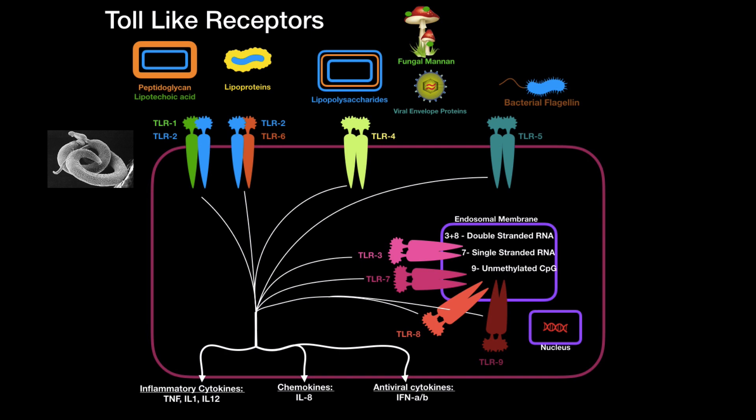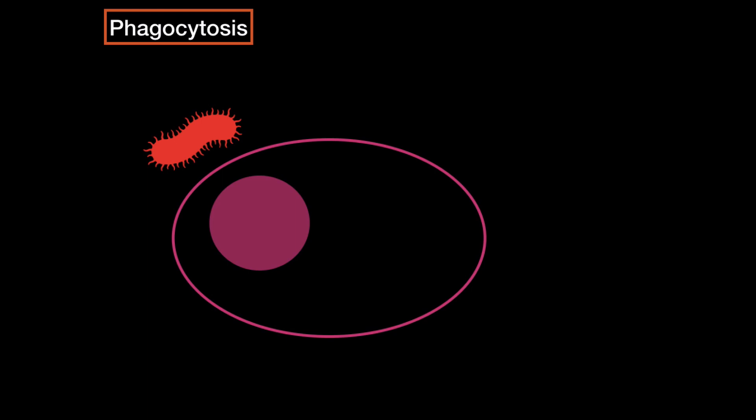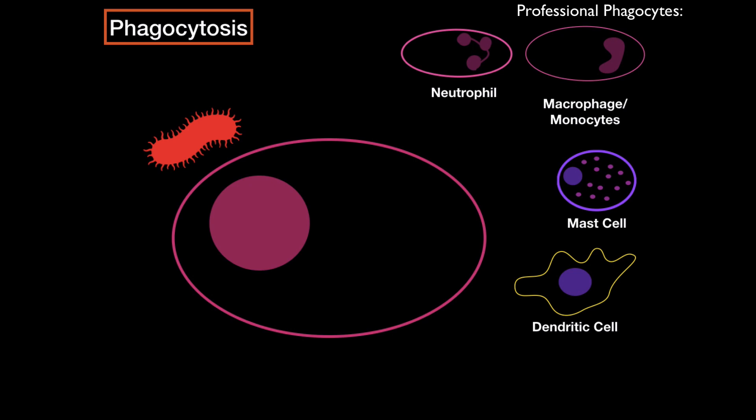So I hope you now kind of get an idea of what toll-like receptors are. So now let's continue and look detailed into these different steps of phagocytosis. So imagine we have a bacteria, and then we add a cell that can actually phagocytose. And we actually got cells in our body called professional phagocytes. These include neutrophils, macrophages, or monocytes if they're in the blood. Mast cells can also phagocytose, and also dendritic cells. Now these are professional phagocytes, but two of them are what we call professional antigen-presenting cells. I'm not going to get into that too much yet, because that has something to do with the adaptive immunity, and we're still in the innate immunity.